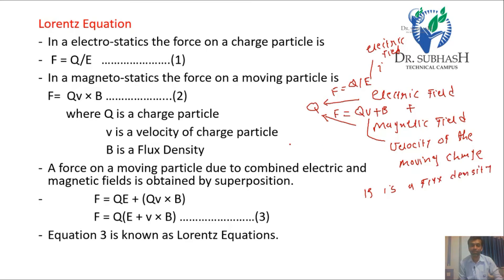If we combine both forces on charge Q due to the electric field and due to the magnetic field, that force can be considered as the Lorentz force, and the equation for the combined force is known as the Lorentz equation, which is given as F = Q(E + V × B).